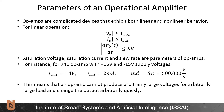Op-amps are complicated devices which exhibit both linear and non-linear responses. For linear operation, the output magnitude should be less than the saturation voltage, the output current should be less than the saturation current, and the slew rate — how fast the output changes — should be below the limit. For instance, for the 741 op-amp with plus/minus 15 V supply voltages, the saturation voltage is 13.6 volts due to the two diode drops in the output stage.